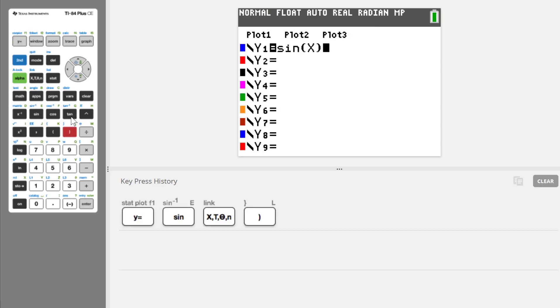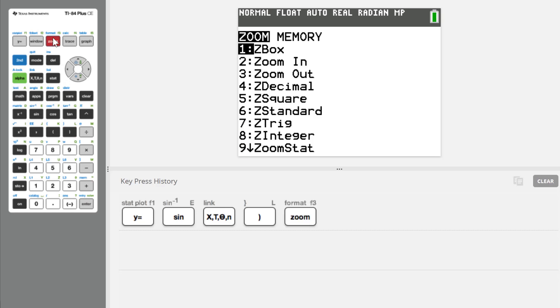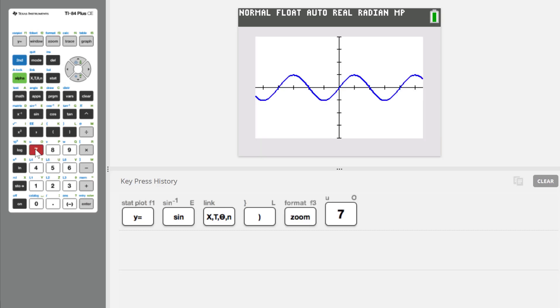y equals sine x. I'll use that zoom trig, z trig option. And there's my graph of the regular sine function. Remember, the z trig option counts by pi over 2 on the x-axis. You can see here's 2 pi, one complete period.